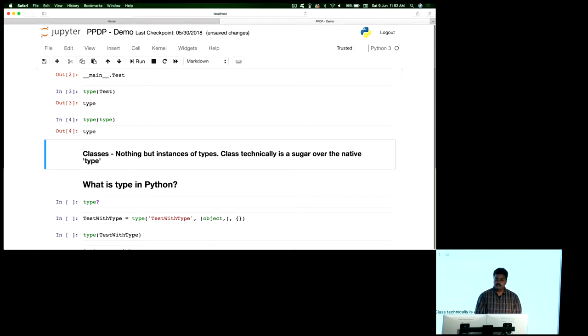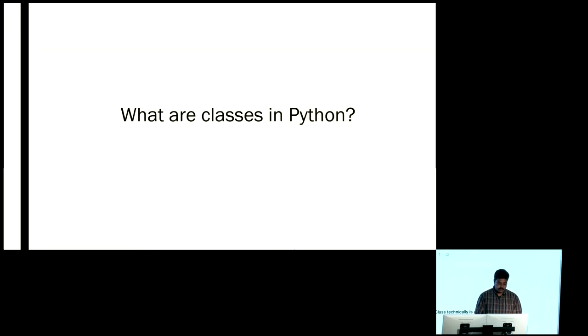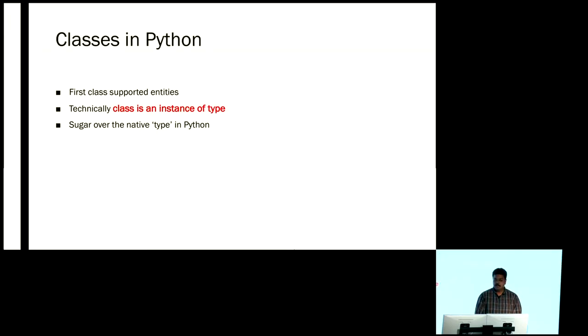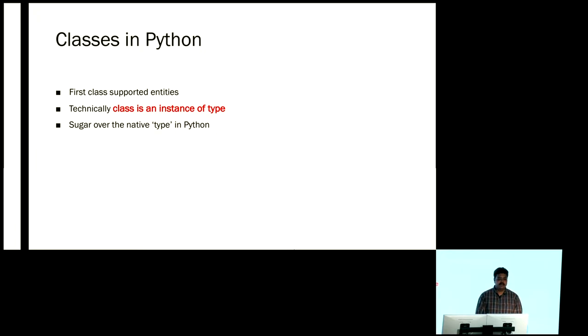I also check the type of the type itself — it again says type. So everything boils down to type. Practically speaking, classes in Python are first-class supported entities. Technically, a class is an instance of type. The class keyword is essentially syntactic sugar in Python, where we use it to create an instance of type.